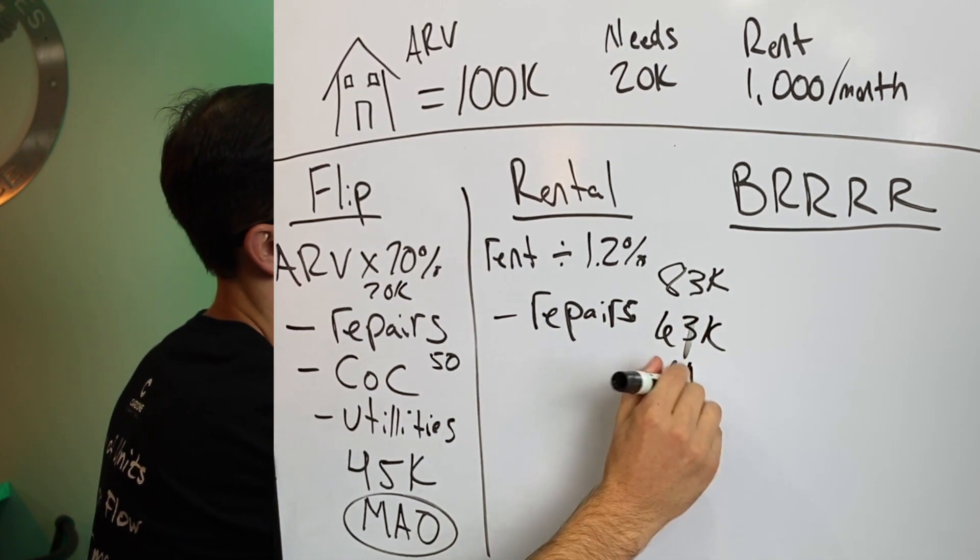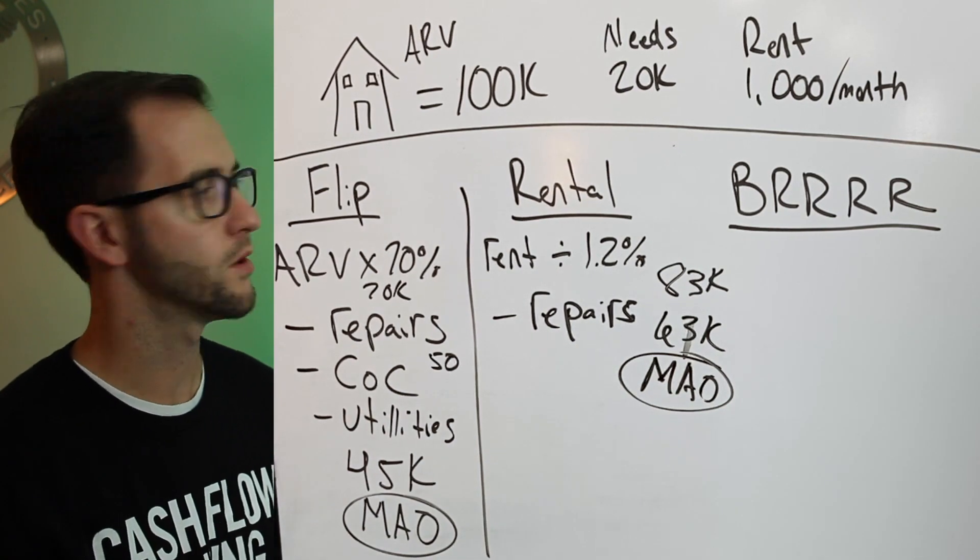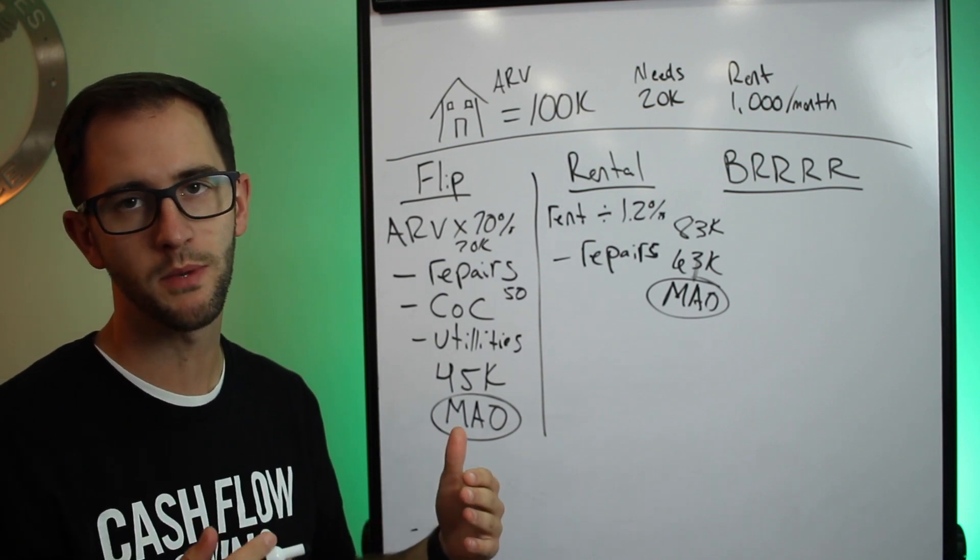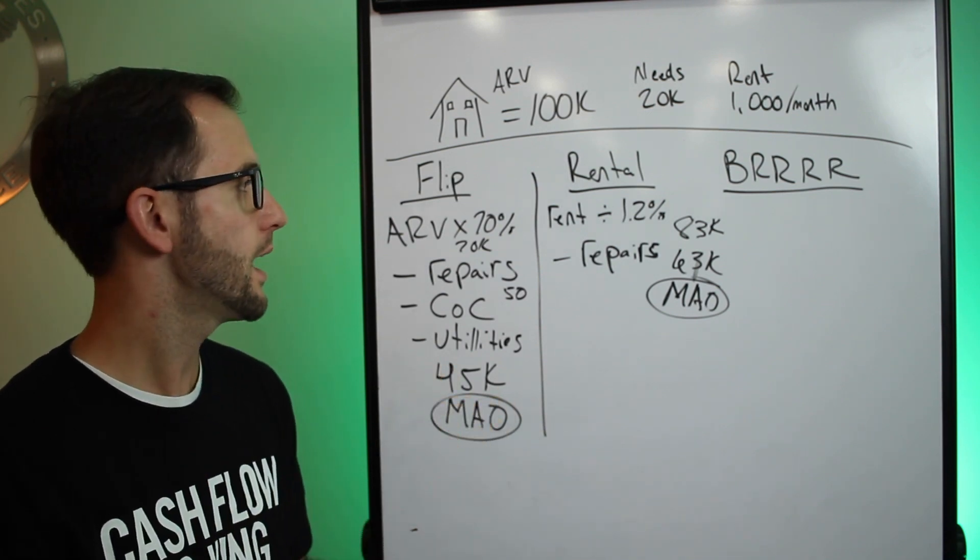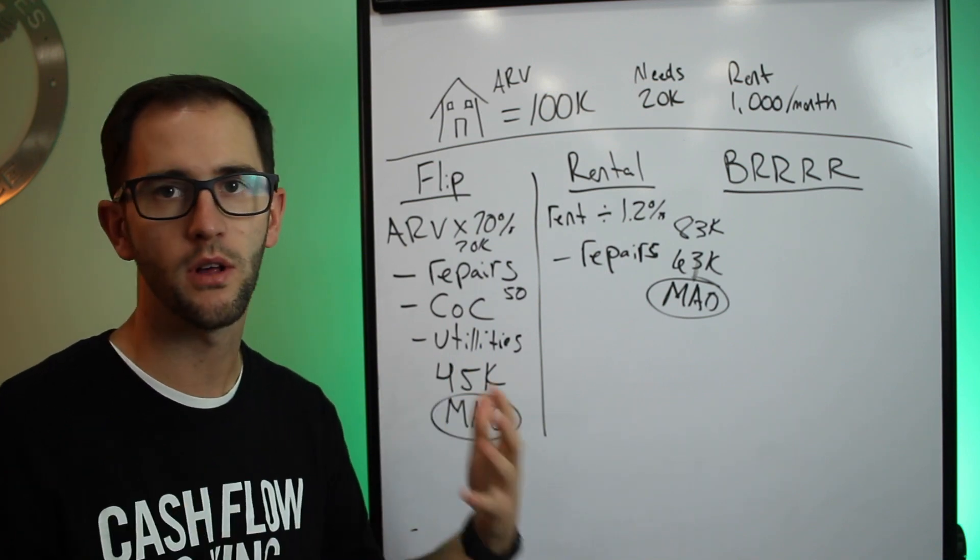And then if we back out repairs, we're going to be at $63K. And then for a rental, that's where you're going to be for your max allowable offer. You're going to be right at that $63K number because once you do the repairs, you'll be able to start getting that rent and you'll be able to cashflow all else equal.